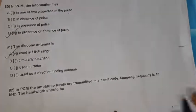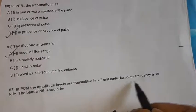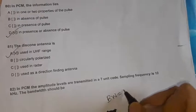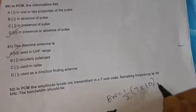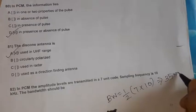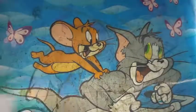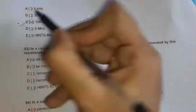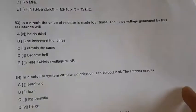Question 82: In PCM, the amplitude levels are transmitted in a seven-unit code and sampling frequency is 10 kHz. Bandwidth equals half into 7 into 10 kHz, so 10 into 7 divided by 2 equals 35 kHz. Option C, 35 kHz, is the right option.